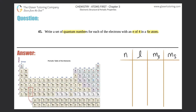First things first, we have to know where selenium is on the periodic table. Se is selenium, and if we look on the periodic table we would find that selenium is right here. That's the first step — find selenium.